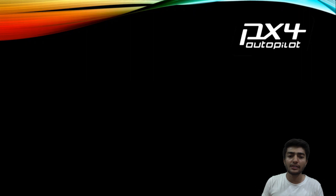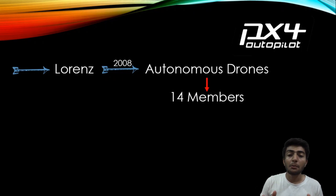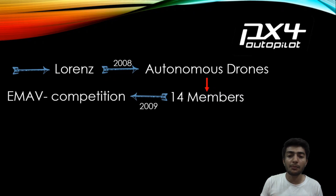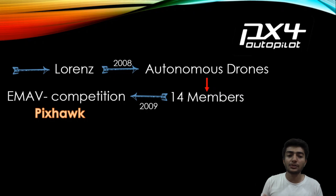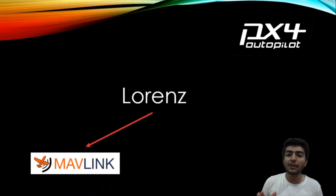Now let's look a little at PX4 history. It all started with a guy named Lorenz. In 2008, he began research on autonomous drones using computer vision alongside his master's degree at ETH Zurich. He wanted to make both the drone and the flight controller software and hardware himself — a big task — so he recruited a team of 14 fellow students. In 2009, the team won the European Micro Air Vehicle Competition. The team's name was PX4, and because they wanted to develop autonomy and computer vision for everyone, they released their software as open source.